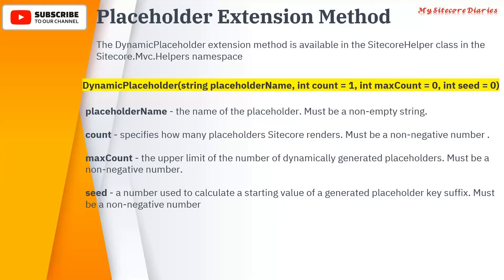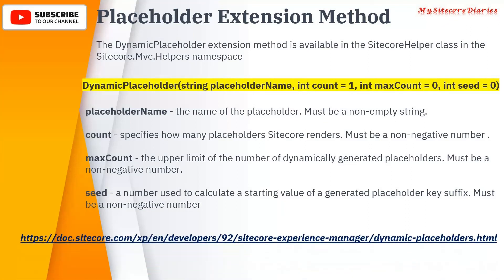The 'max count' defines how many times you can add that placeholder — in our example, how many times 'right column' can be added. There is also a 'seed' parameter, which is used to calculate the starting value of the generated placeholder key. For example, if you want keys like 100 or 200, you can specify the seed as 100. A link with more details about this extension method will be shared in the description.